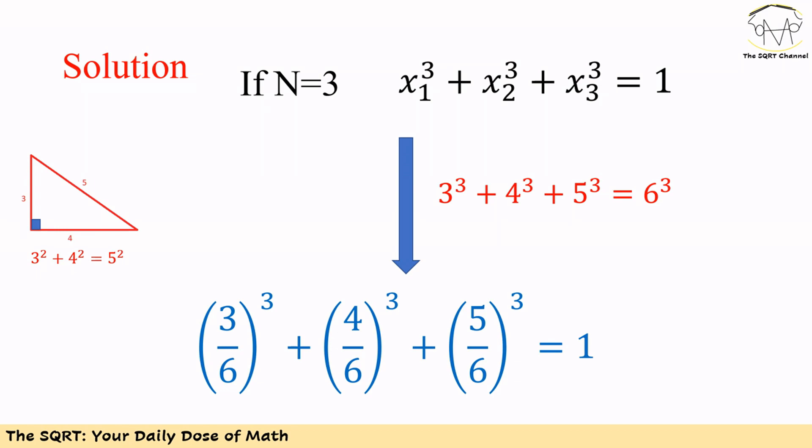And we have 3 to the power of 3 plus 4 to the power of 3 plus 5 to the power of 3 equals 6 to the power of 3. Using this little trick, we can write the equation as 3 over 6 to the power of 3 plus 4 over 6 to the power of 3 plus 5 over 6 to the power of 3 equals 1.